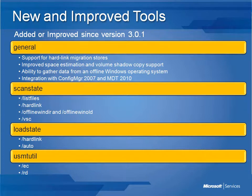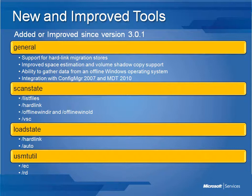LoadState also has a new switch for recovering user state from a hardlink migration store and for automatically using the migration files supplied with USMT. USMTutils also has additional command line options in USMT4, including the /ec switch which returns a list of supported cryptographic algorithms on a current system, and the /rd switch which can be used for removing directories from all fixed drives.